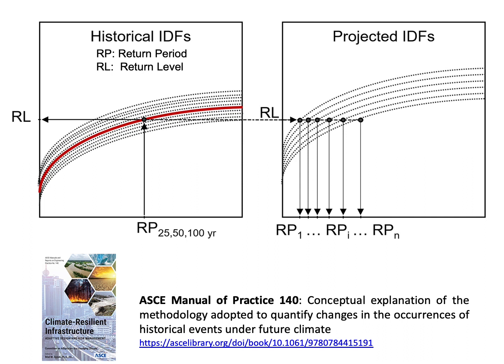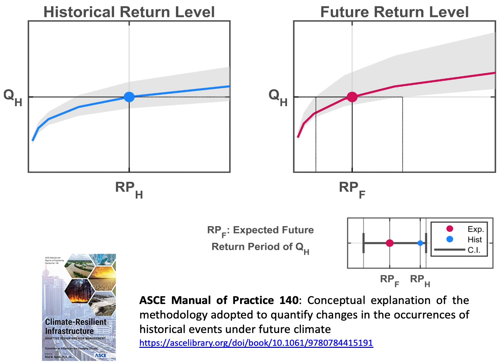We can look at a particular return level in projections — the right panel — and look at their corresponding return periods. This method allows us to see how today's 100-year event will change in a warming climate under a certain future representative concentration pathway. This method is already included in the ASCE manual of practice as a method for updating IDF curves. Our Bayesian-based framework for parameter estimation and uncertainty analysis allows us to put confidence intervals around today's return period values and look at future relative to past.